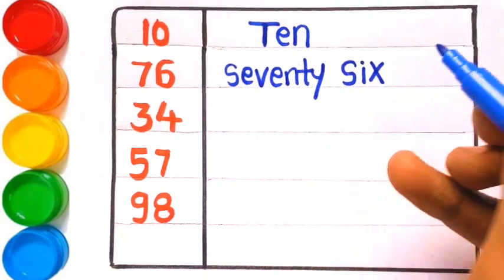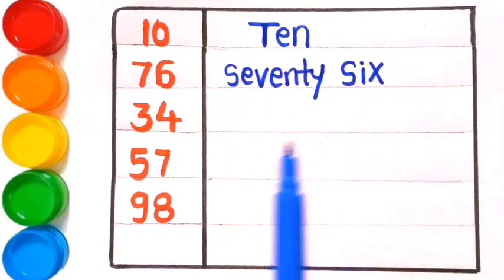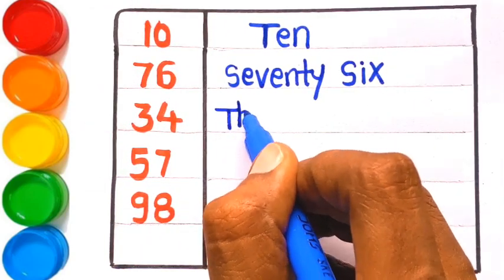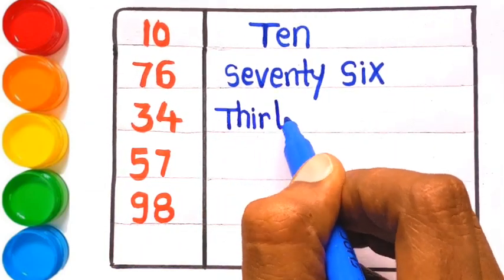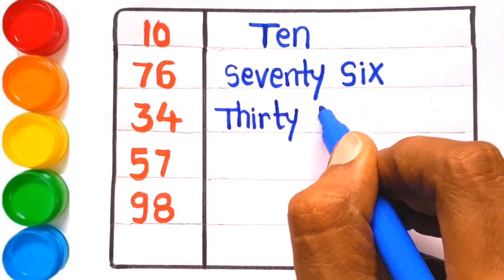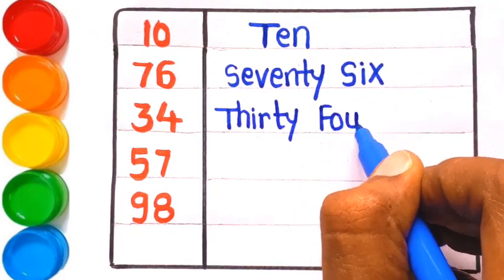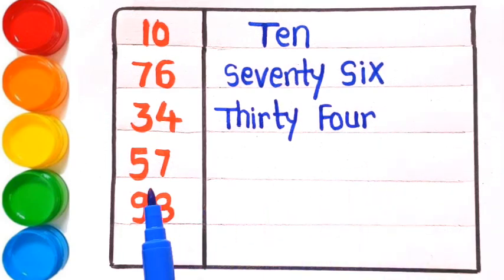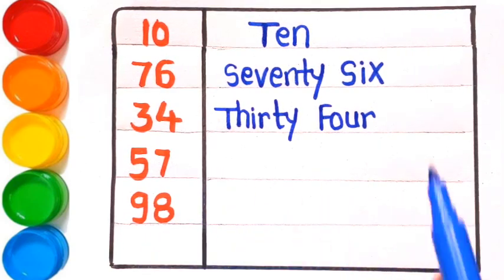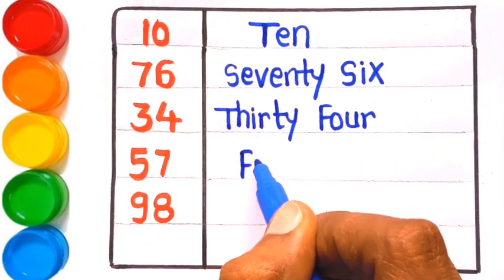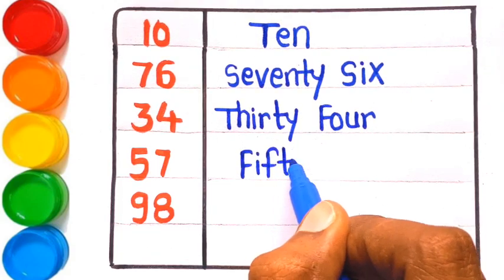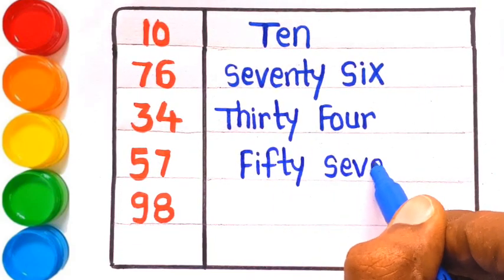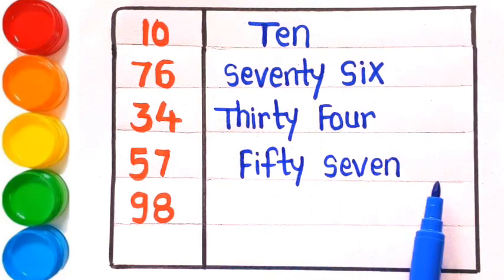...S-I-X, 76. Next is 34 — T-H-I-R-T-Y, F-O-U-R, 34. Next is 57 — F-I-F-T-Y, S-E-V-E-N, 57.